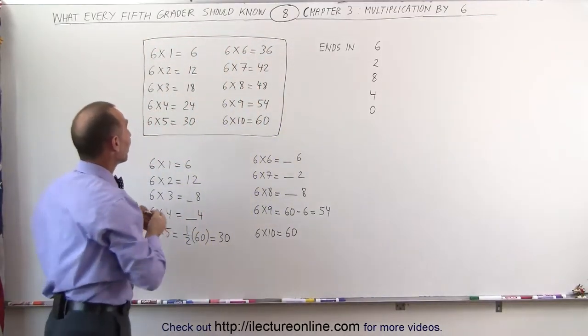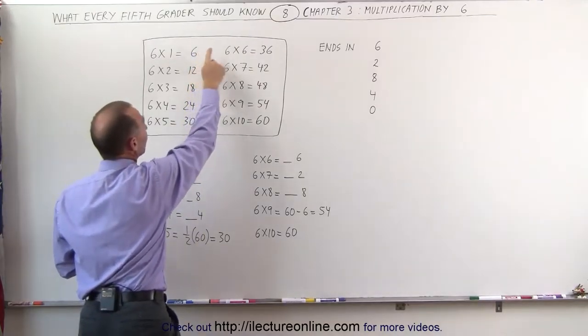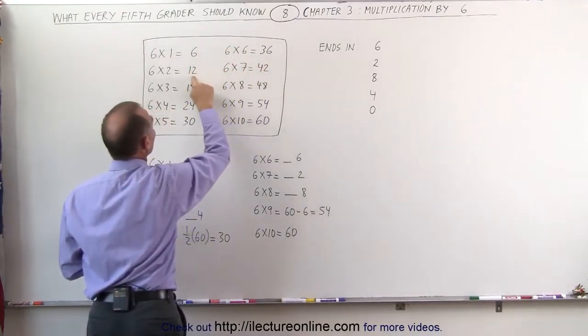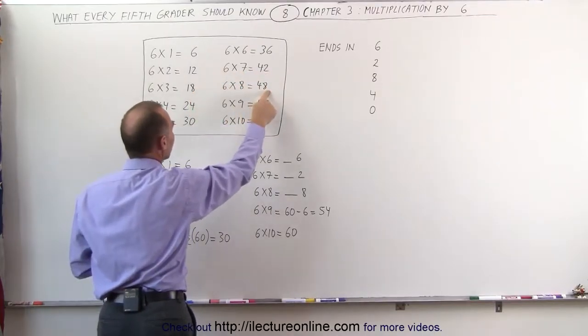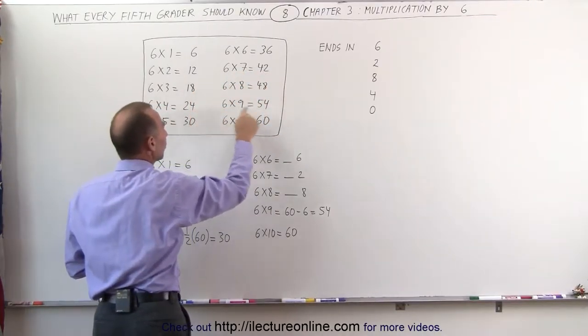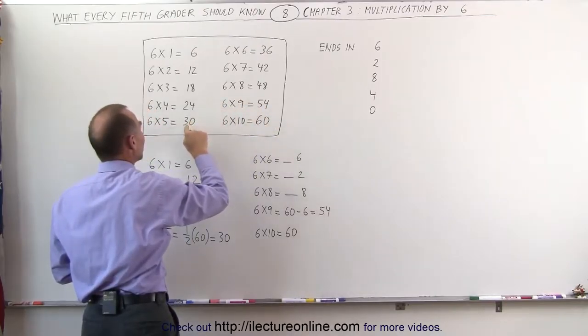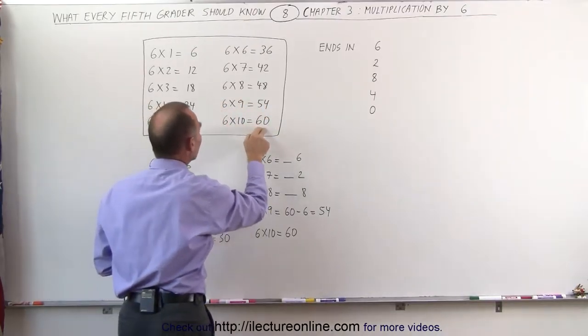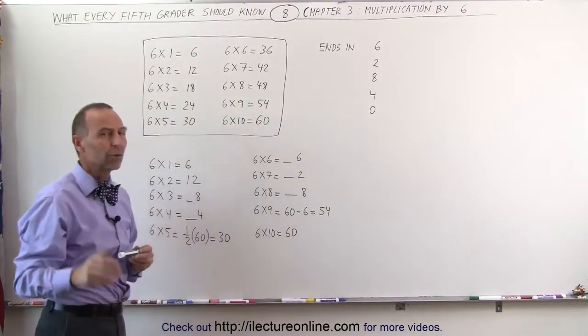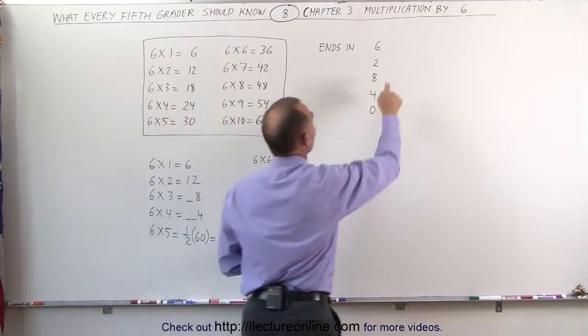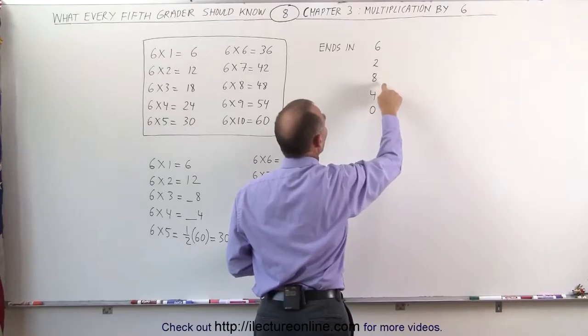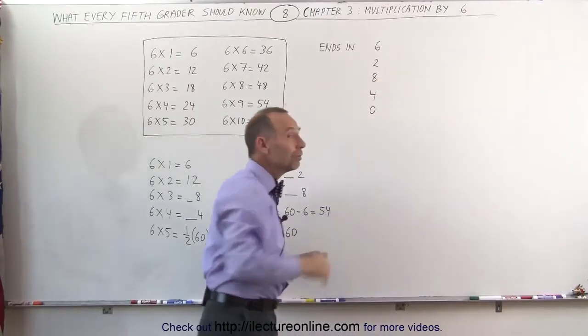Look at the answers, and notice that the first one ends in a 6, so does this one. The second one ends in a 2, so does this one. The third one ends in an 8, so does this one. The fourth one ends in a 4, so does this one. And the last one, 30, which is half of 60, but they both end up in 0. So you recognize when we multiply times 6, the numbers always end up in a 6, a 2, an 8, a 4, or a 0. And they're all even.